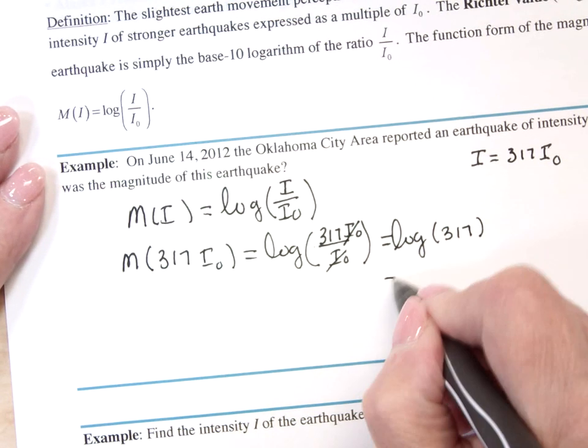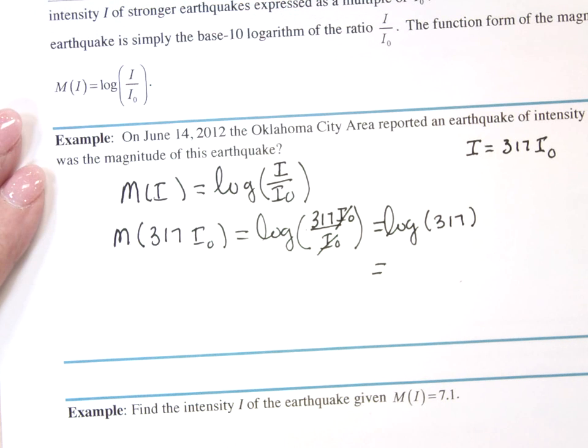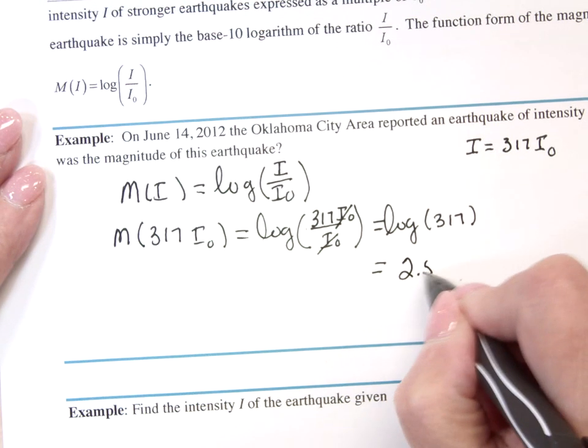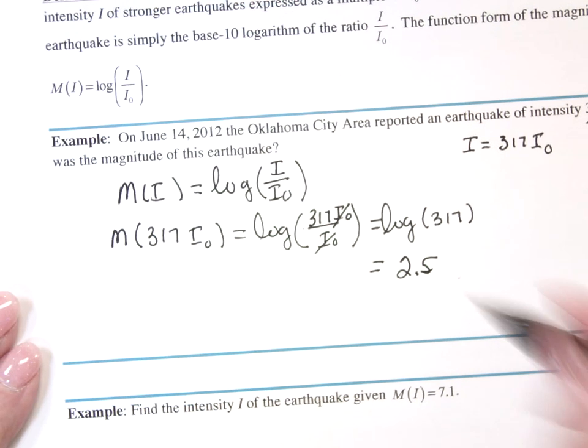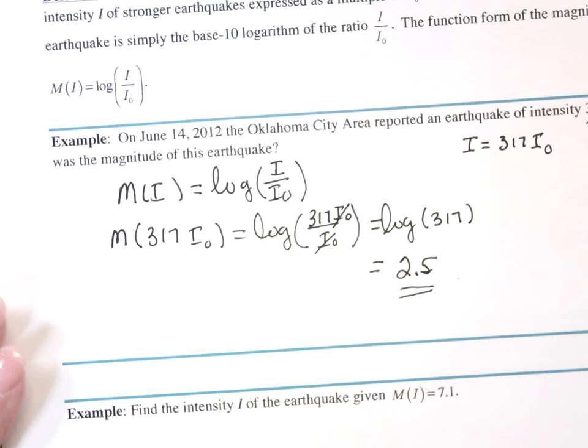The log of 317, since I've already worked this out, is 2.5. So the quake was magnitude 2.5. Not too bad.